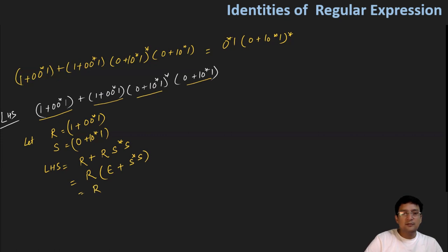What is the meaning of this? The meaning is ε + s+. s+ means the set will have s, double s, triple s and so on. And if we include epsilon in this set, this will actually be the closure of s. So we are writing it as r into s*.